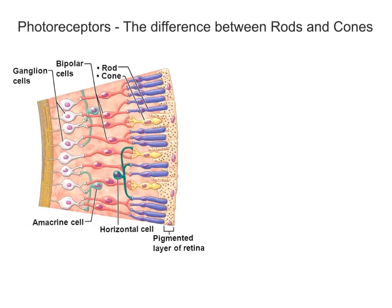It's a question I get asked many times, particularly by my A-level students — what the difference between these two are. You tend to learn about them at GCSE when you learn about the eye, the basic structure of the eye and the retina, but not in too much detail. What I've got here is a very simple diagram, and you can see on the right-hand side we've got the pigmented layer of the retina, and then we've got our photoreceptors.